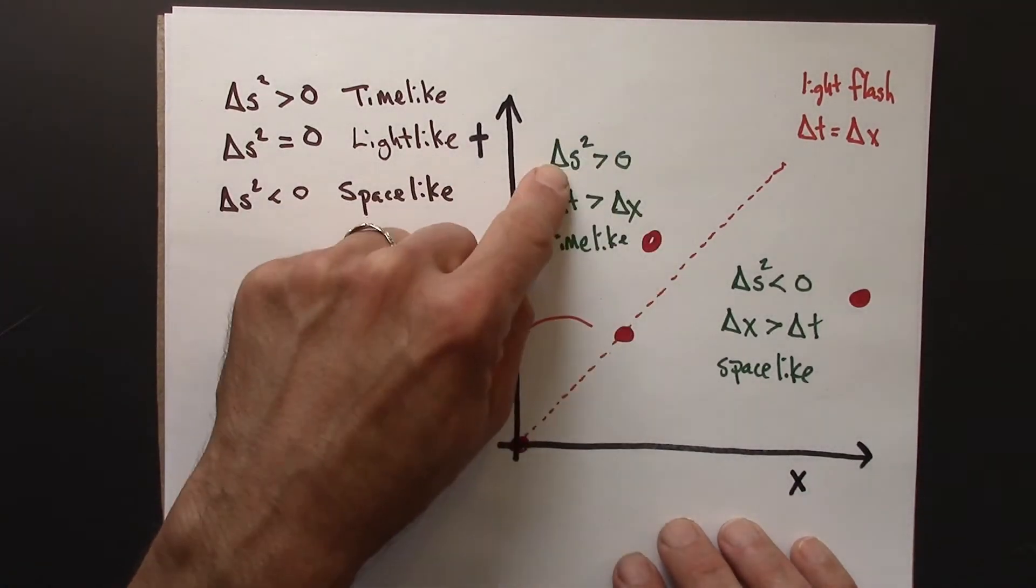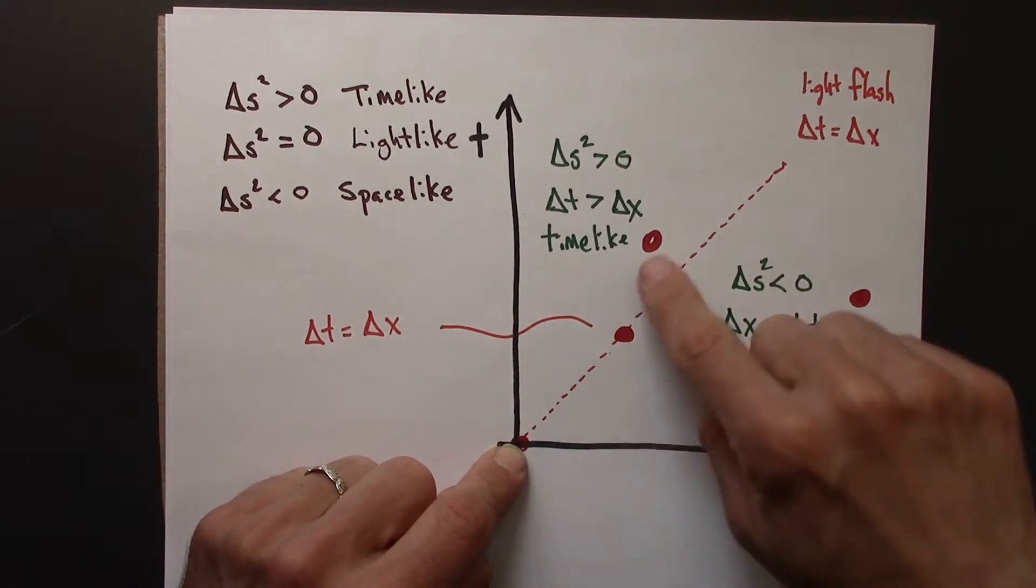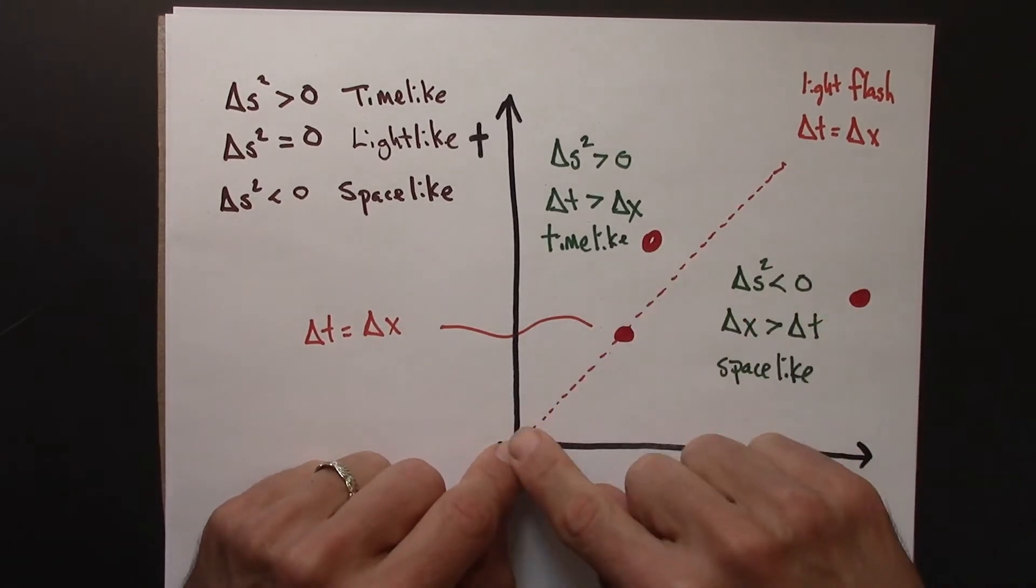Over here in the time-like region, events, any time-like event, could be causally connected to the event at the origin. Why?